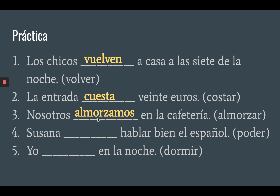Number four: Susana blank hablar bien el español. The verb is poder, to be able to or can. The answer is puede — Susana puede hablar bien el español. Susana can speak Spanish well. Number five: yo blank en la noche. Dormir means to sleep. The answer is duermo — I sleep at night. So as you can see, all of these answers except for number three changed from an O to a UE. The reason we did not change in number three is because we do not stem-change for nosotros.